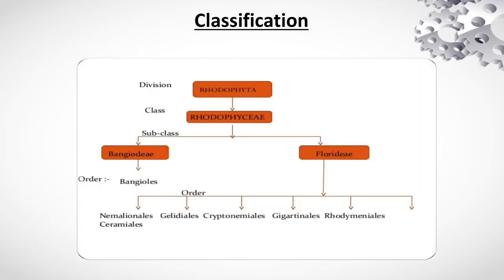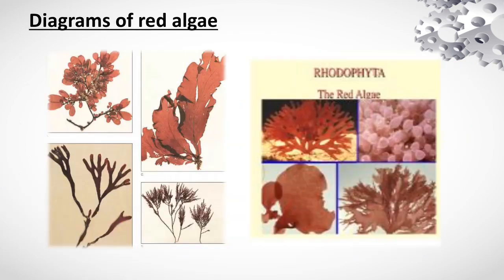Classification: Division is Rhodophyta, Class Rhodophyta, and subclasses and orders are also present. In the diagram of red algae, you can observe the different types of red algae shown here.